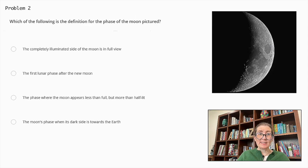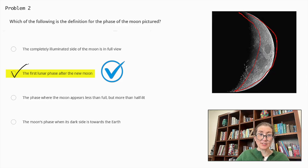Which of the following is the definition for the phase of the moon pictured? The correct answer is the first lunar phase after the new moon. The image shows a crescent moon. So we've got that here, the crescent moon, which is the phase that comes right after the new moon. In this phase, only a small portion of the moon is illuminated and it appears as a crescent shape. So the correct answer is that.